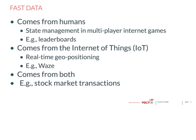Fast data also comes from the Internet of Things. Essentially everything of commercial significance is going to be sensor-tagged to report its state or location in real time. Waze is a current example — it uses your cell phone to generate real-time geopositioning to get you through traffic. The high-message rates come from the Internet of Things, from humans, and may well come from both places. Stock market transactions are one example: electronic trading systems generate about 99% of the stock market transaction rate, but the other 1% comes from humans doing data entry.